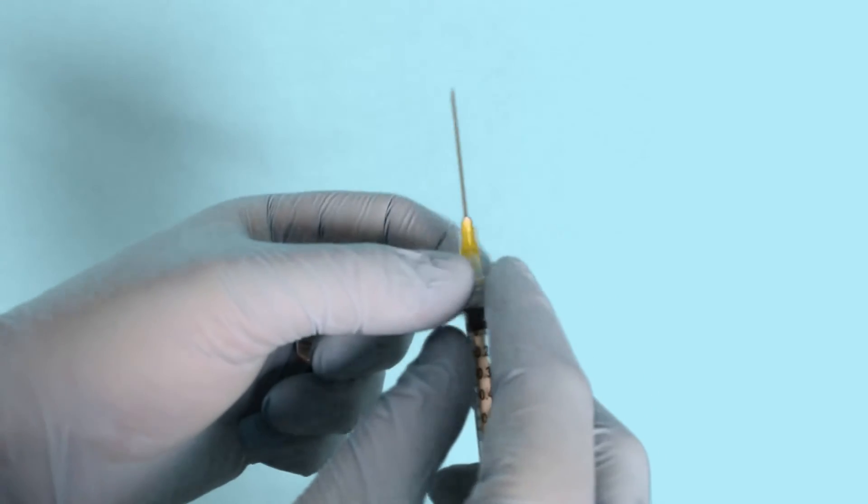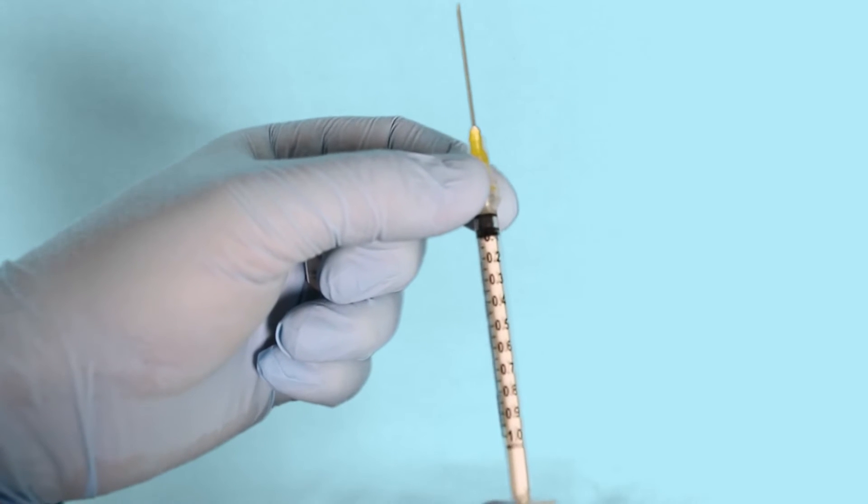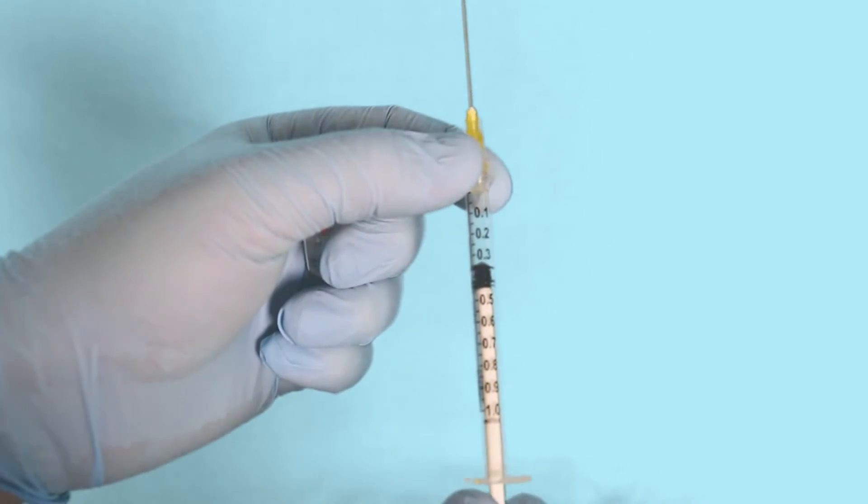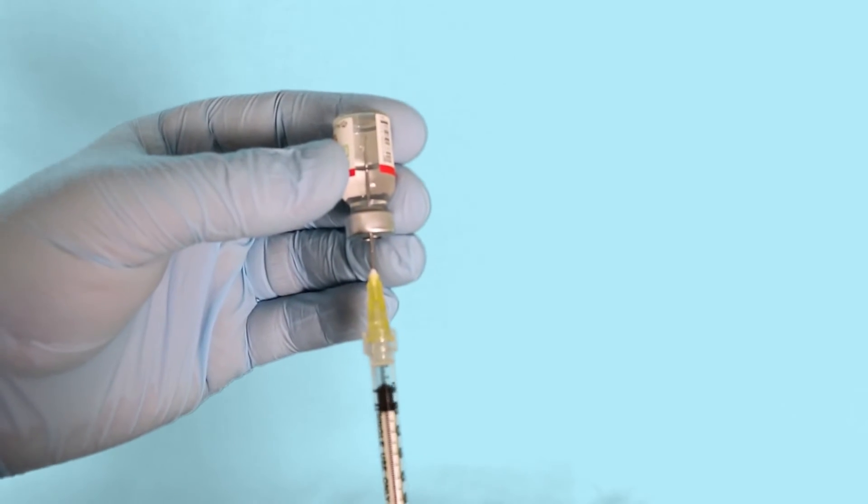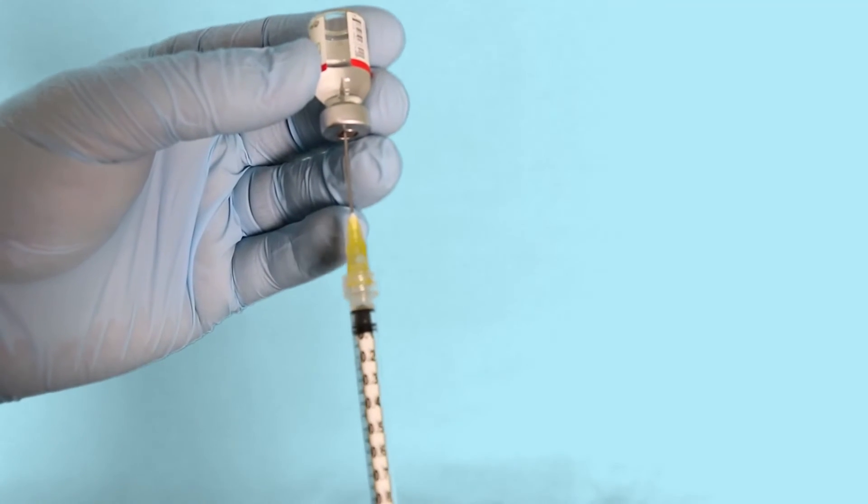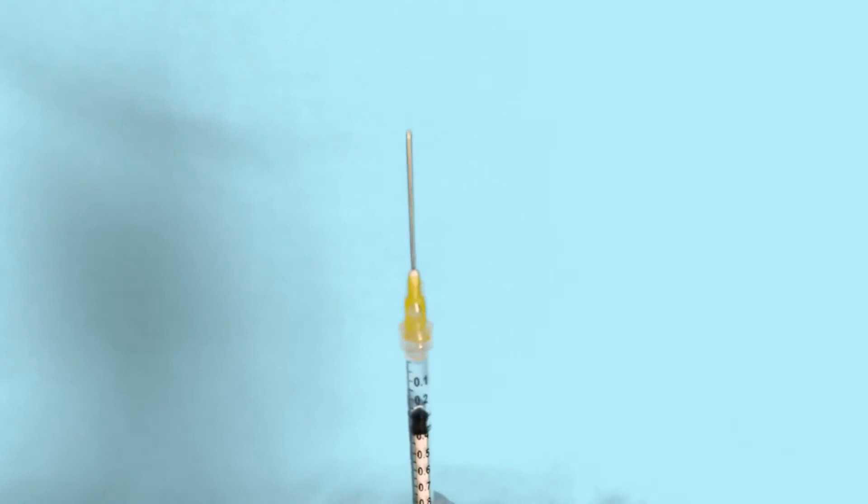The adult epinephrine autoinjector dose is 0.3 mg, so in this case we will draw up 0.3 ml of air before injecting it into the empty space above the fluid line. Then draw up your intended dose. Lastly, make sure you express any air before administering an injection.